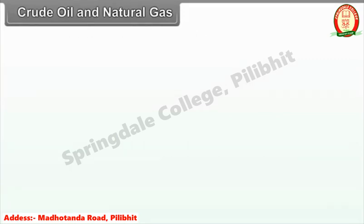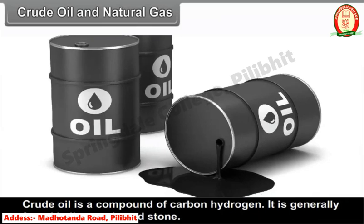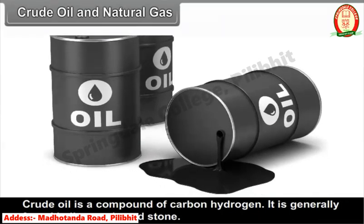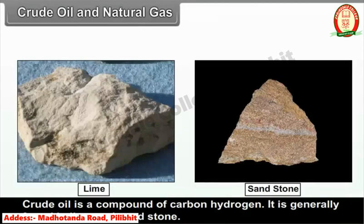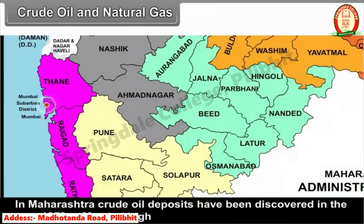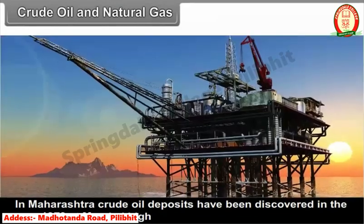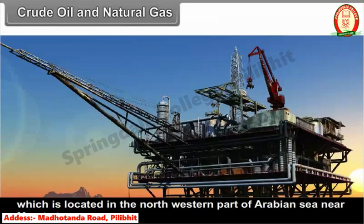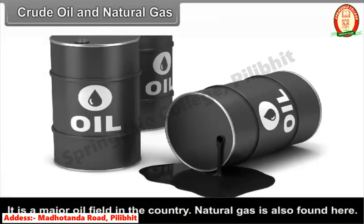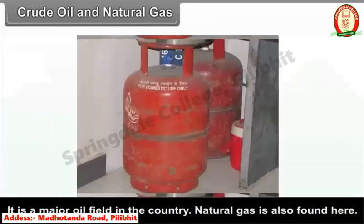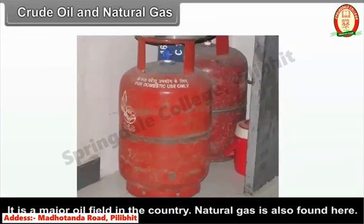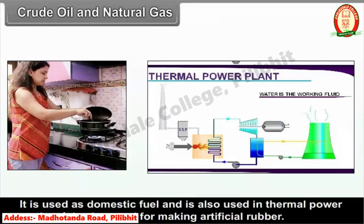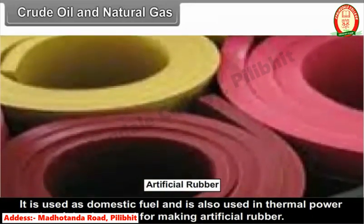Crude oil is a compound of carbon and hydrogen, generally found in limestone and sandstone. In Maharashtra, crude oil deposits were discovered in 1973 at Mumbai High, located in the north-western part of the Arabian Sea near Mumbai — it is a major oil field in the country. Natural gas is also found here. It is used as a domestic fuel, in thermal power stations, and for making artificial rubber.